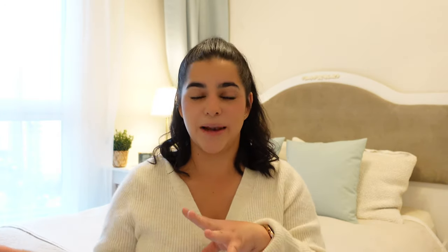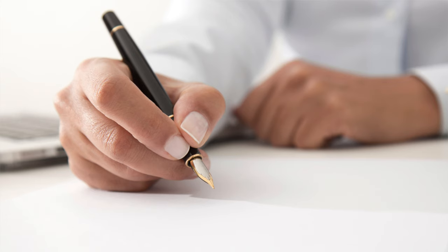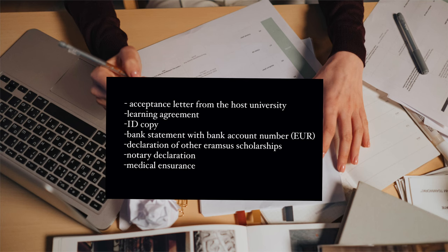Once your learning agreement is signed, you can come to your host country. Before you leave, you also need to sign your financial contract, because Erasmus provides you with a monthly stipend. You do this at your Erasmus office — submit some documents, and they'll give you a date and time to come sign. This must happen at least one month before departure. You'll need a bank statement showing your account number and a notary declaration where someone guarantees repayment to Erasmus if needed.